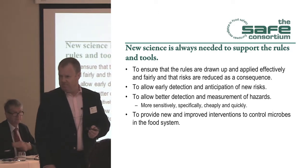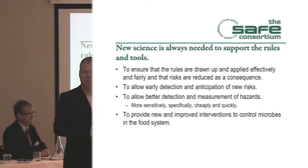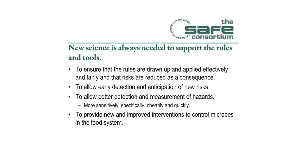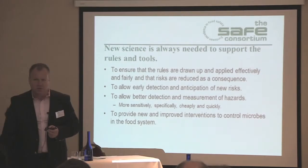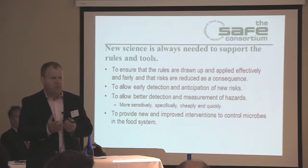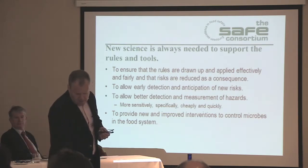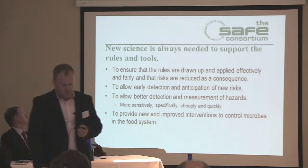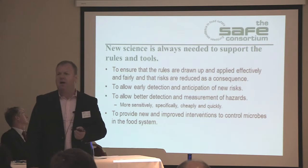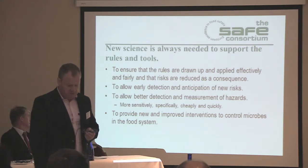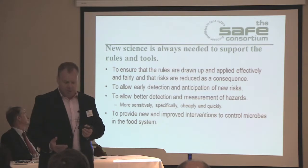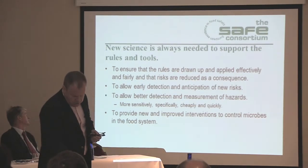How do we measure the reduction in risk? Do we really have the tools to say that this research has been well spent and there is a genuine consequence in food safety? To allow early detection and anticipation of new risks — can we actually detect it early, and can we anticipate risks coming on? To allow better detection and measurement of hazards — always looking to do things more sensitively, more specifically, more cheaply, and more quickly — and incorporate these into management systems. This is the science output which we need to support the rules and also the tools.